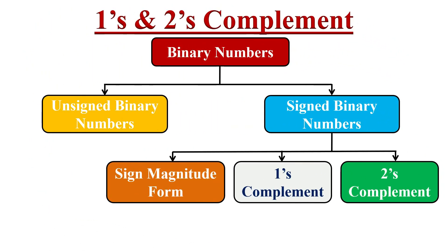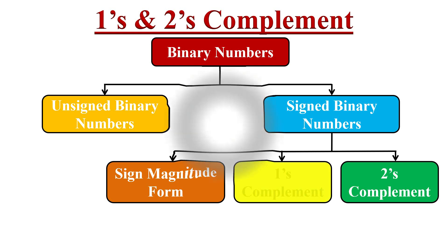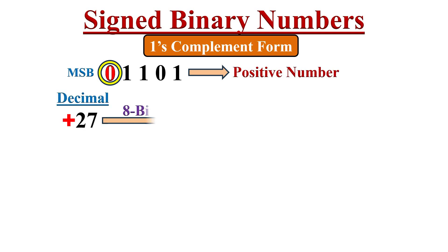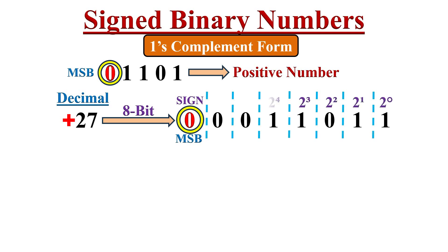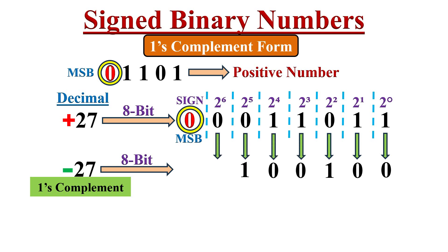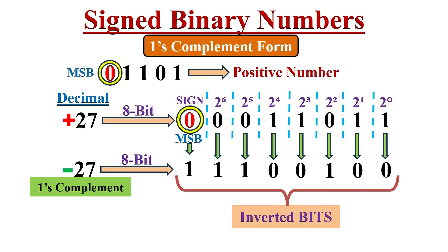Now let's see one's complement representation. In one's complement form, if the MSB is 0, it represents a positive number. For example, plus 27 in 8-bit form has the magnitude in true binary form with MSB equals 0. For negative numbers, such as minus 27 in 8-bit form, we invert the plus 27 binary bits — replacing zeros with ones and ones with zeros — including the sign bit. These inverted bits represent minus 27 in one's complement form, with MSB equal to 1 denoting negative.